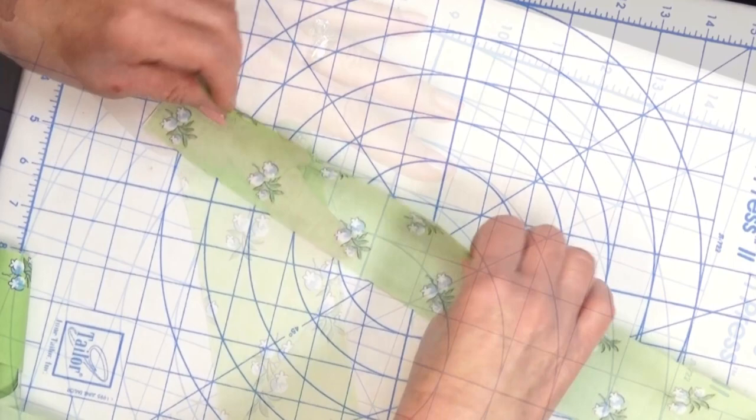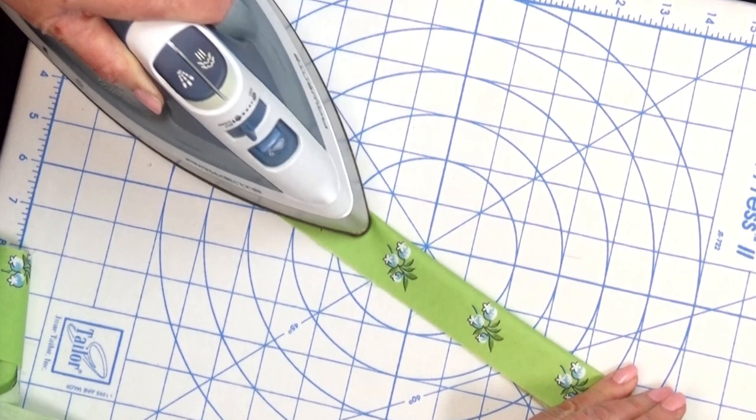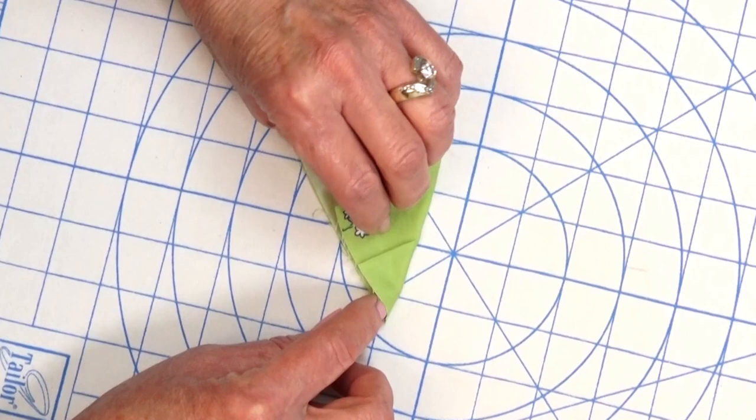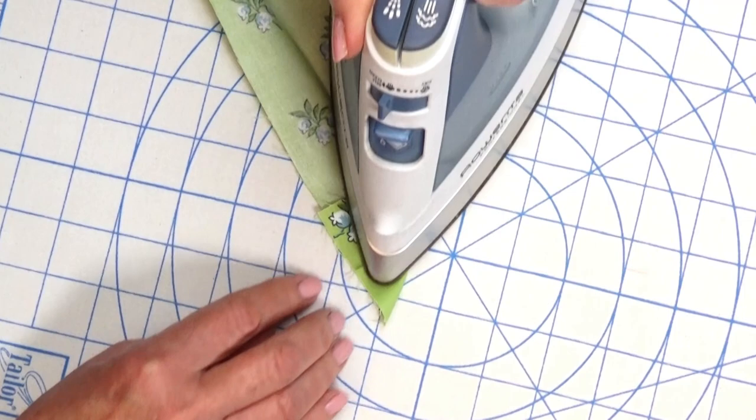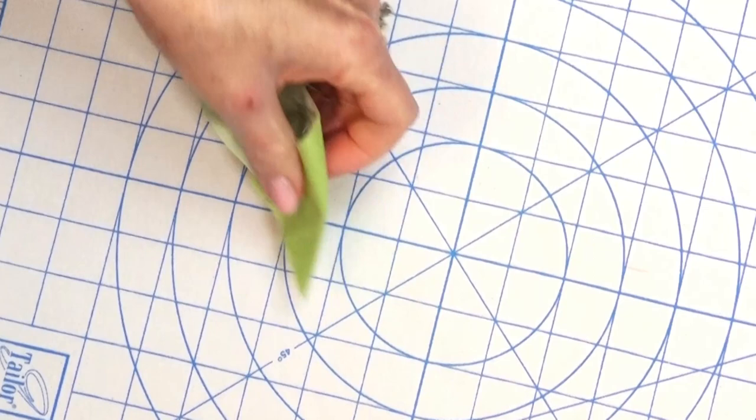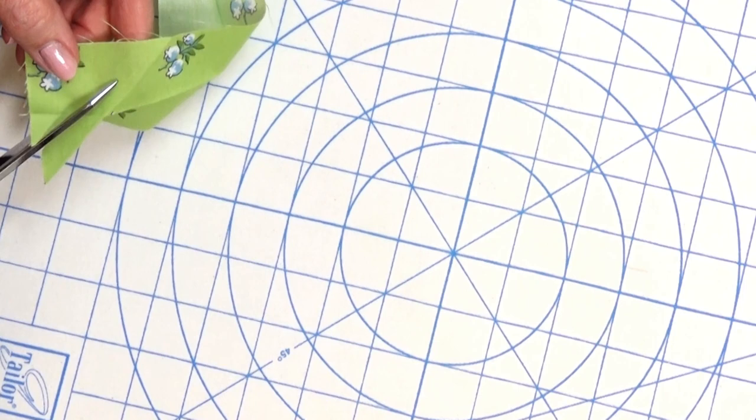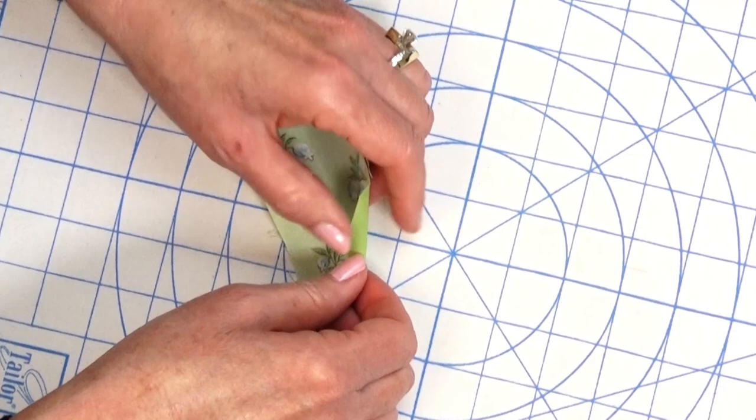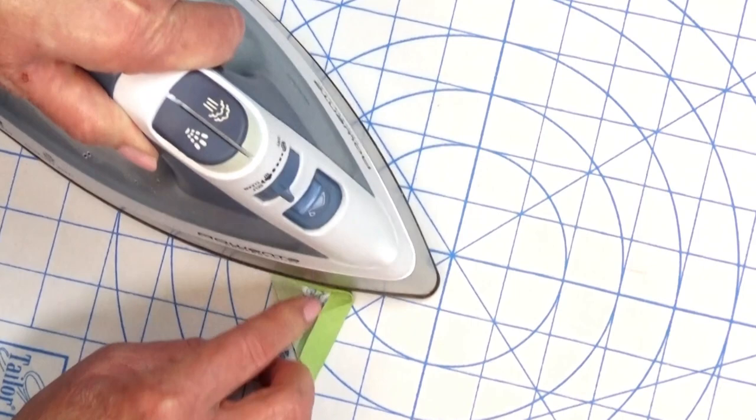Now we're going to press our binding strips along the long edge, wrong sides together. After the binding is pressed, you're going to open up one end and bring a corner down to the bottom to basically make a right angle. And then we're going to press. After we're done pressing, we can trim that to a quarter of an inch. Now, fold your binding in half again and repress. And that little angled opening is going to come into play when we finish binding our very first place mat.